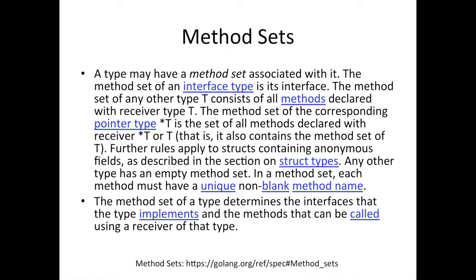This comes directly from the specification — there's a link at the bottom. It says a type may have a method set associated with it. If you have a type and implement some methods — and implementing a method simply means putting a receiver on it, because without a receiver it's just a function — once you have a receiver, that function is linked to that type. So a type may have a method set associated with it.